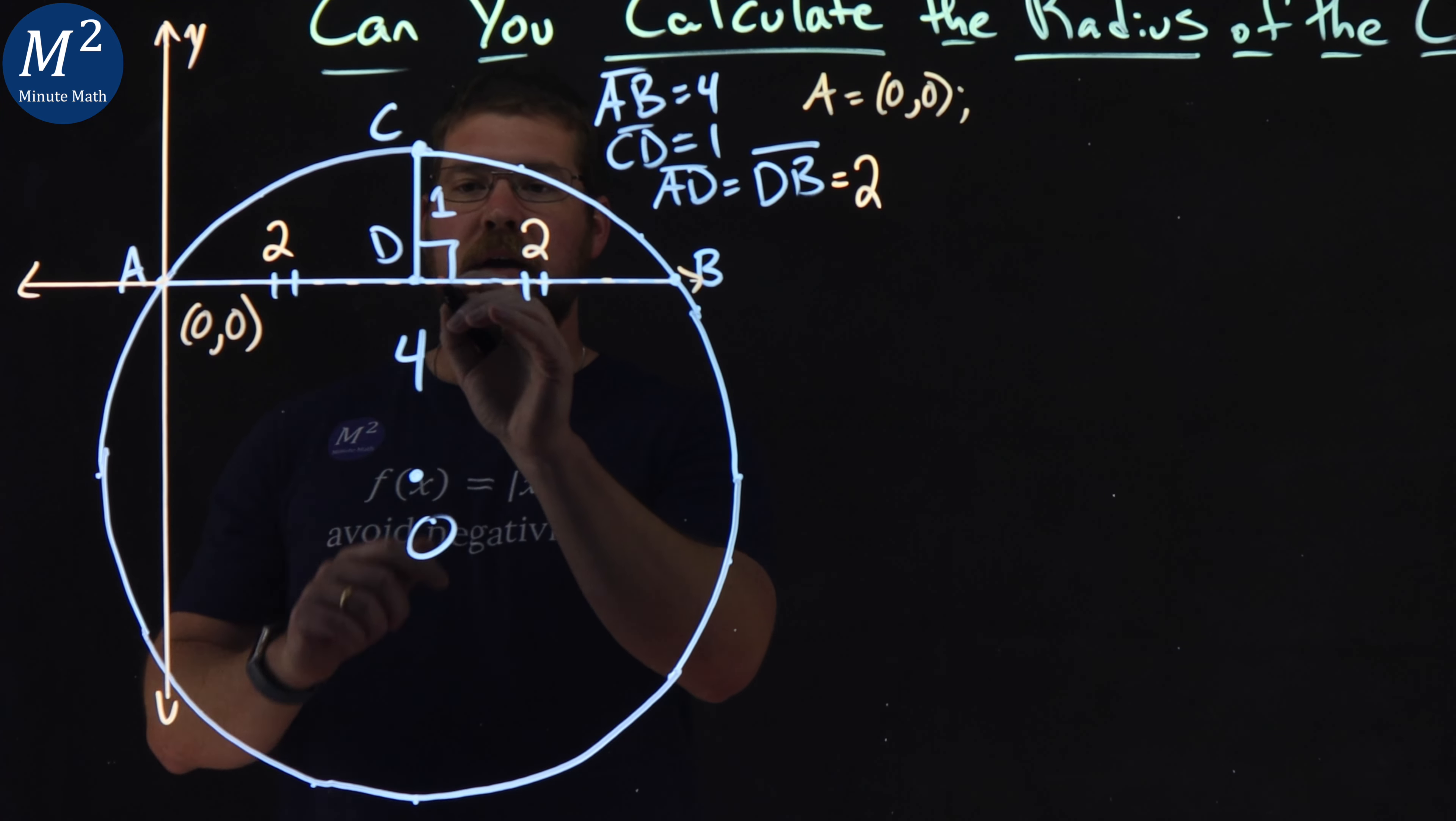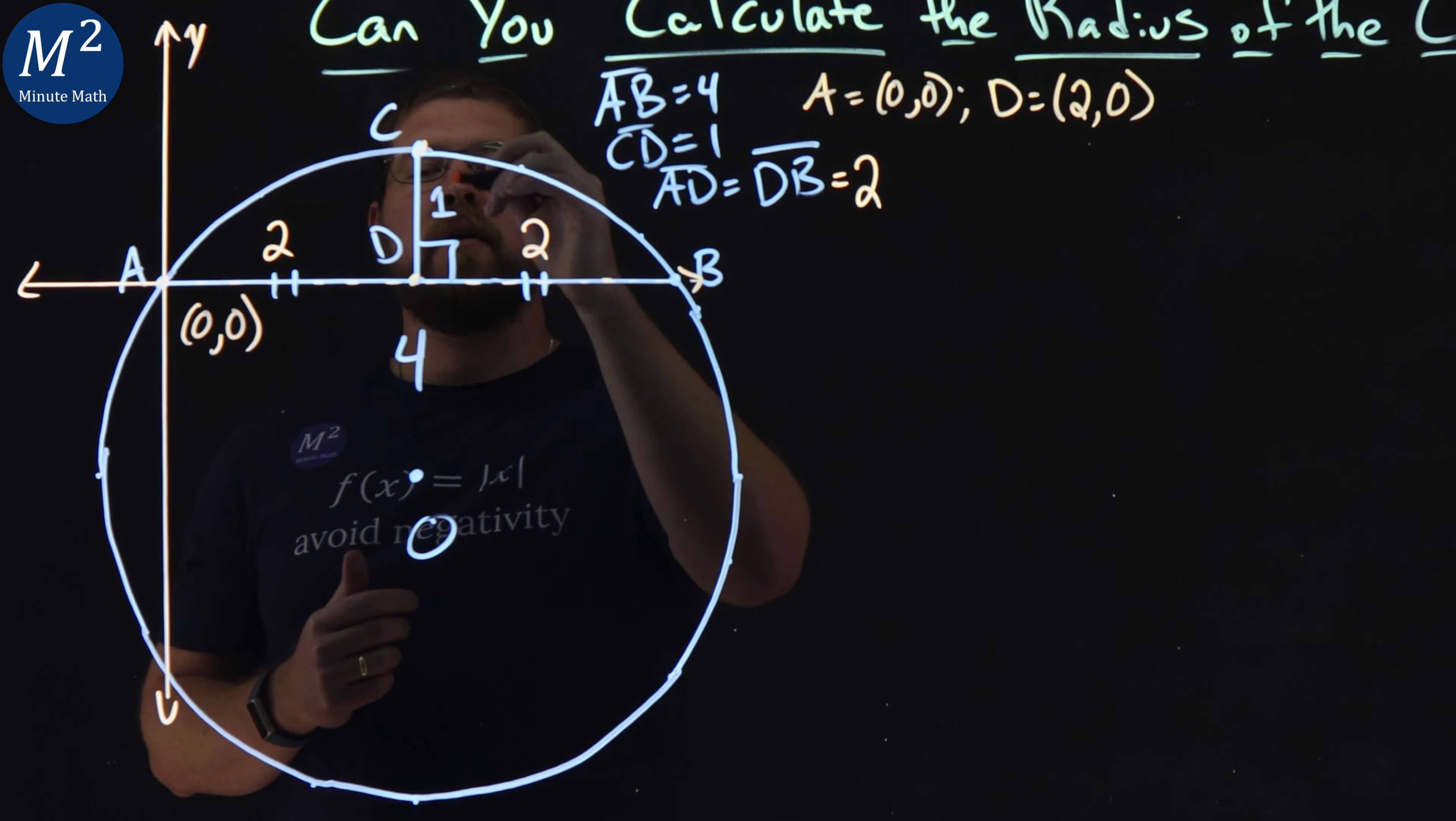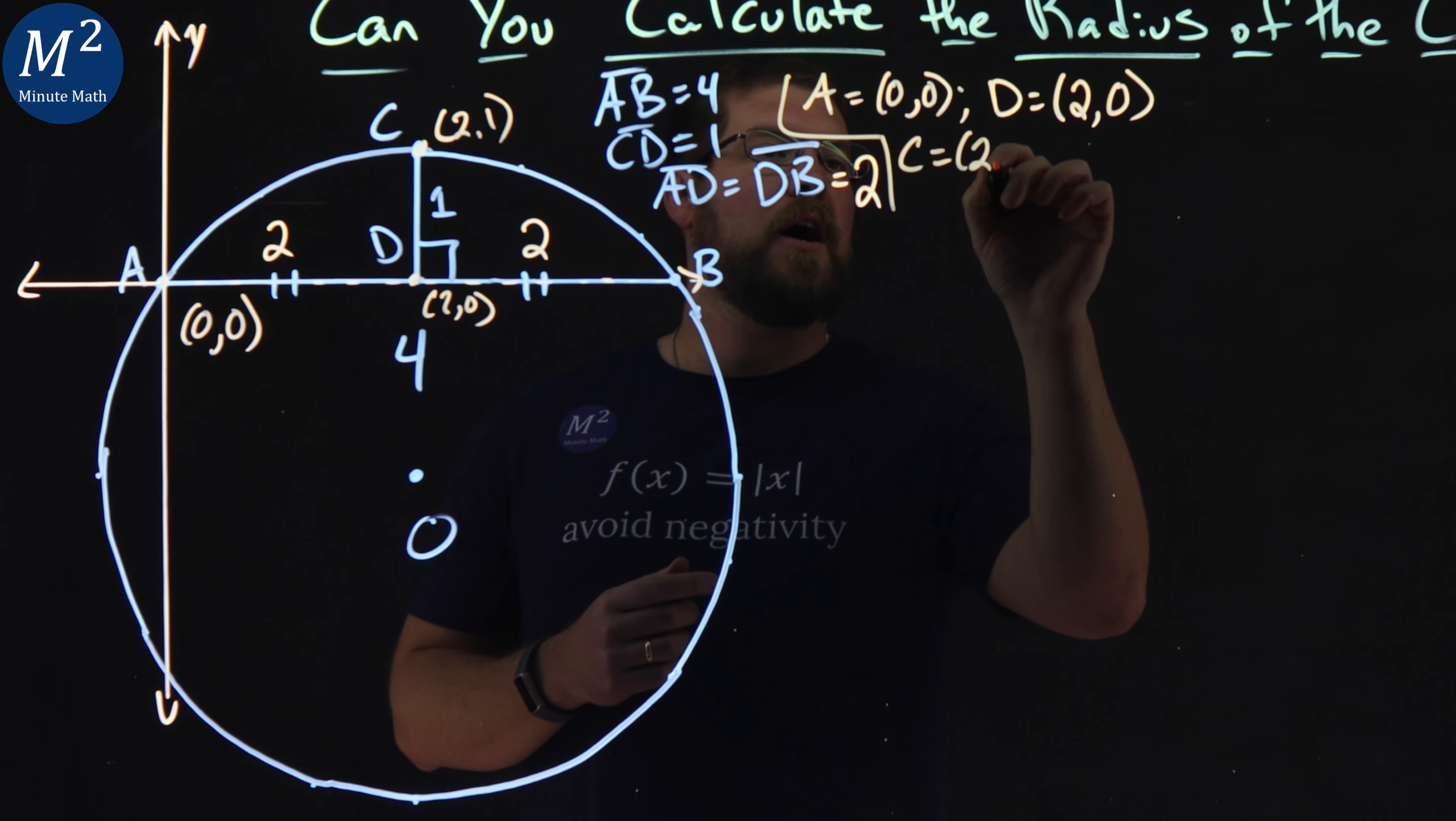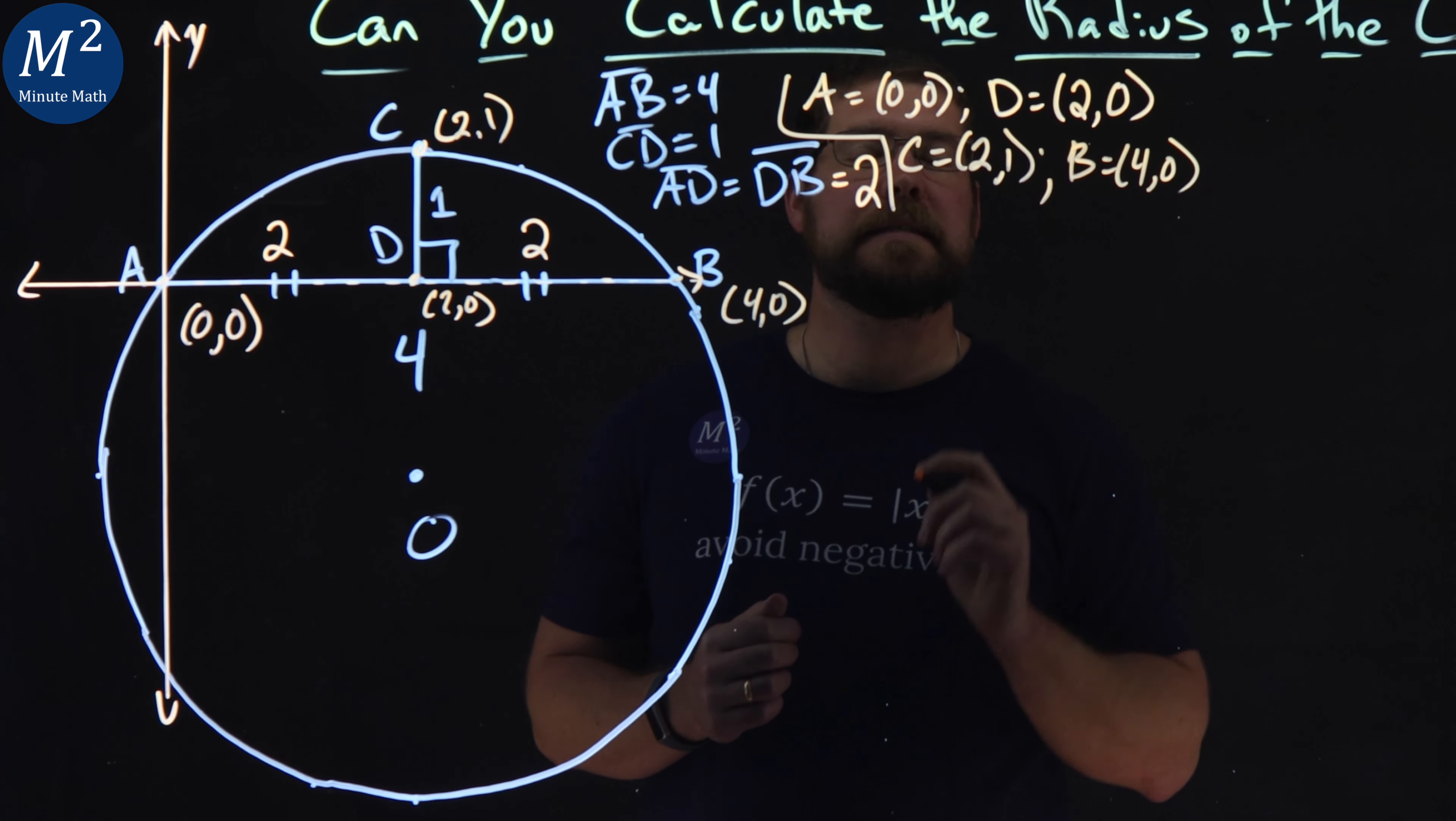D right here is two units over to the right. So D has a coordinate value of X is two, our Y value is still zero. C, we're going to go up one. So here, we have two comma zero. While we have it going up one, it's going to be two comma one. So C is a two comma one. And lastly, our B value here, that is going to be all the way over four comma zero. So B value is equal to four comma zero.